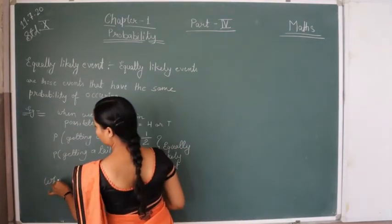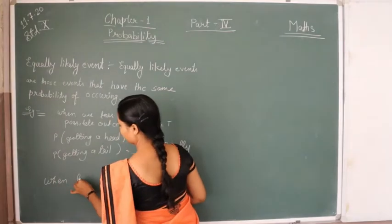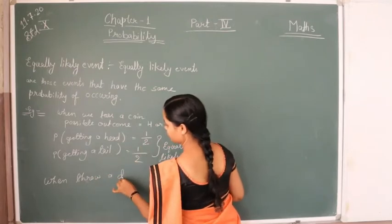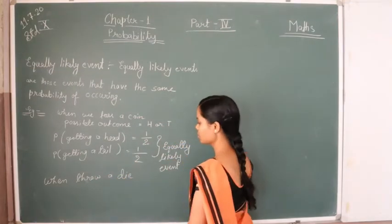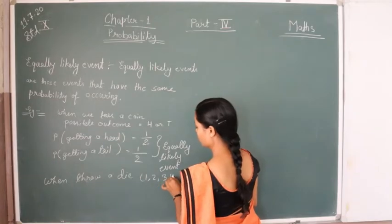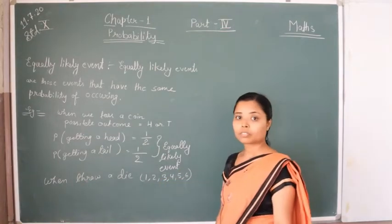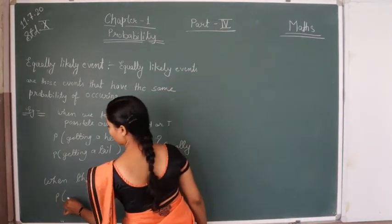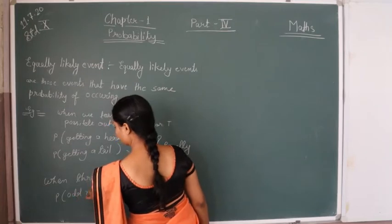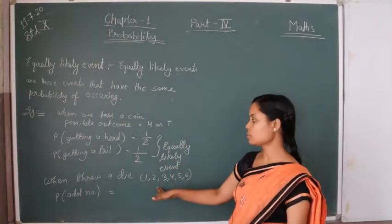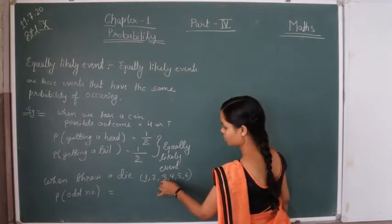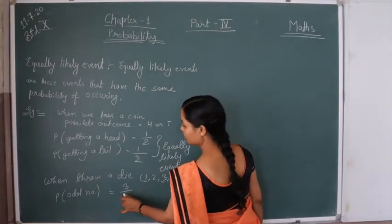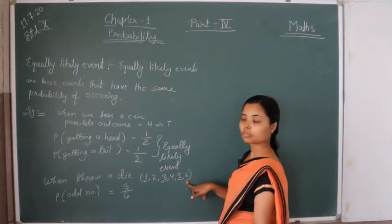If we throw a die, the possible outcomes are 1, 2, 3, 4, 5, or 6. If you find the probability for odd numbers, the favorable outcomes are 1, 2, and 3 — there are 3 odd numbers. So the favorable outcomes are 3 and the possible outcomes are 6.